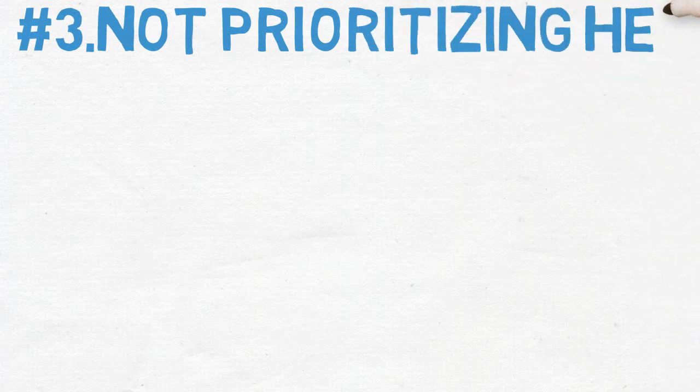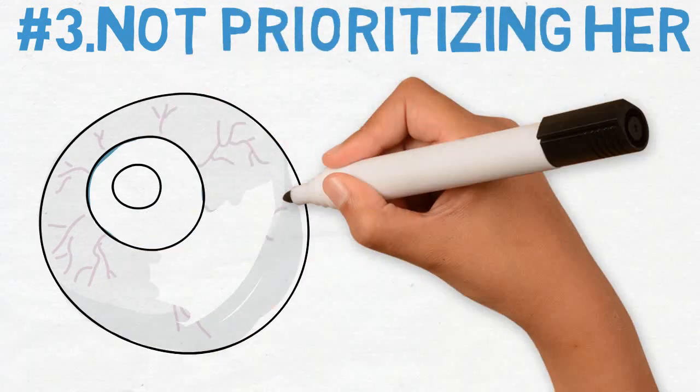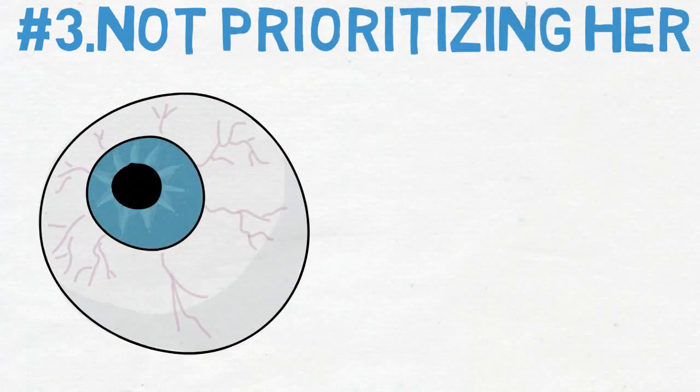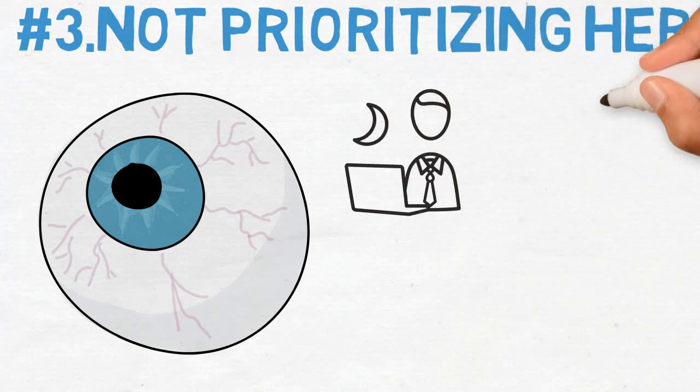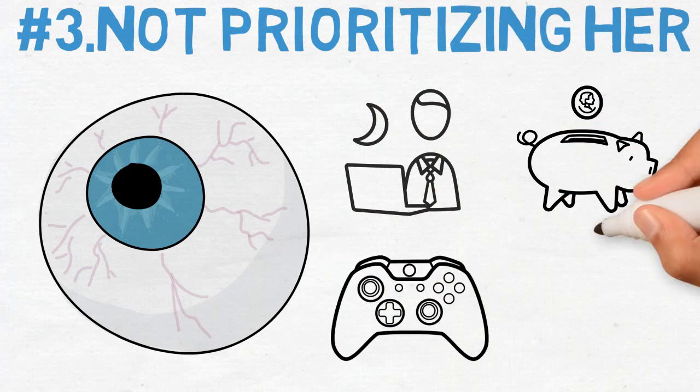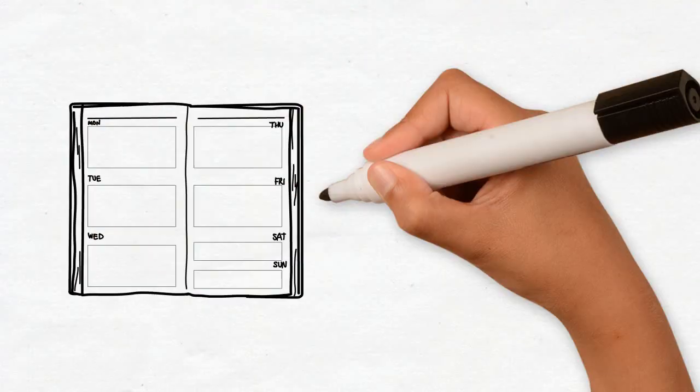Not prioritizing her. Women like the attention and the feeling of importance you give them. If most of the time you're paying more attention to career, business, hobbies, or friends over her, it's time to reorganize your day planner.